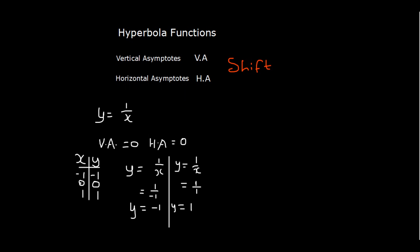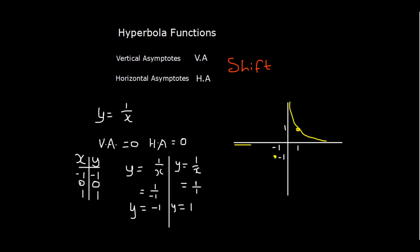We can now plot the graph. There is no shift here — remember the asymptotes mean a shift; if there are no asymptotes, there is no shift. Where x = 0, y = 0. Where x = -1, y = -1. Where x = 1, y = 1. Our graph goes like this — that is the graph for y = 1/x.